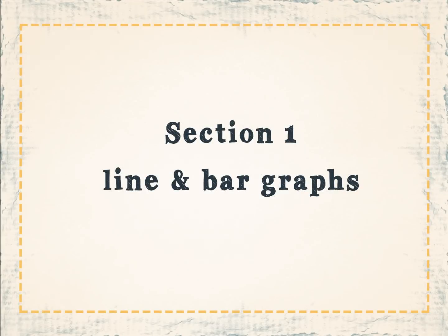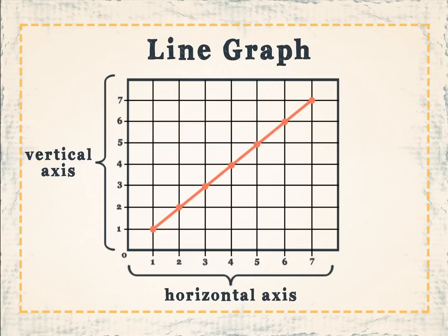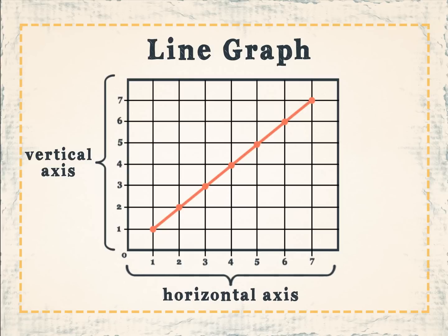Section 1: line and bar graphs. A line graph consists of a vertical axis and a horizontal axis. The vertical axis lies vertically on the graph while the horizontal axis lies horizontally.